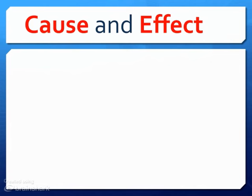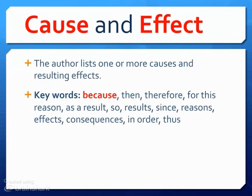The next type of text structure is cause and effect. This is when the author lists one or more causes and then the resulting effects. A cause is what happens before and the effect is what happens after. Some key words to look for are because, then, therefore, for this reason, as a result, so, results, since, reasons, effects, consequences, in order, and thus — because all of these deal with what happened before or what happened as a result of after: the cause and the effect.